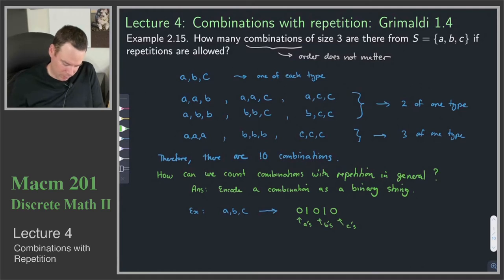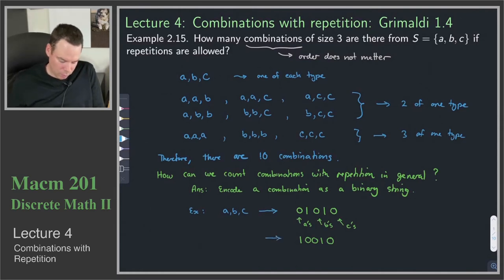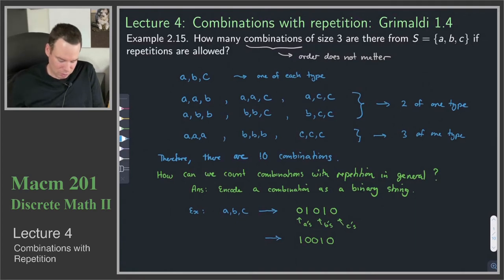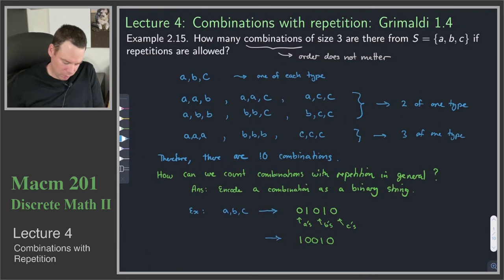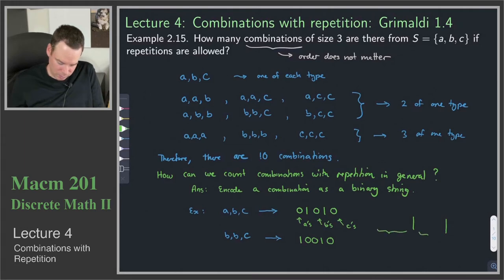For example, the binary string 1, 0, 0, 1, 0: what appears to the left of the first one is my selection of A's — there are no zeros there, so I didn't select any A's. Between the two ones there are two zeros, telling me I made two selections of B. After the second one there is one zero, so I selected one C. In short: the ones are dividers or separators, and what appears before, between, and after them are the choices for A's, B's, and C's. I use zeros to indicate how many of each I've selected.